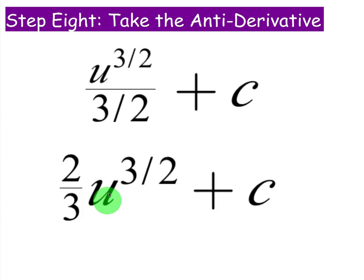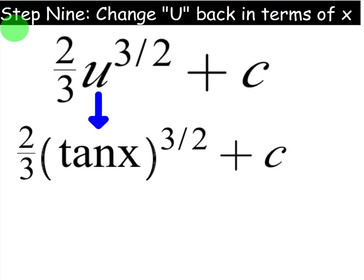And then for the final step, you will replace u with what it was equal to, which was tangent of x. So for step 9, when you change u back in terms of x, you have 2 thirds tangent of x to the 3 halves plus c. You could maybe rewrite in terms of radical form, but you don't have to. You can just leave it this way.